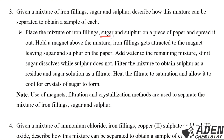Place the mixture of iron filings, sugar, and sulfur on a piece of paper and spread it out. Hold a magnet above the mixture — iron filings get attracted to the magnet, leaving sugar and sulfur on the paper. Add water to the remaining mixture in a beaker and stir: sugar dissolves while sulfur does not. Filter the mixture to obtain sulfur as a residue and sugar solution as the filtrate. Heat the filtrate to saturation and allow it to cool for sugar crystals to form. Note: use of magnets, filtration, and crystallization methods are used to separate this mixture.